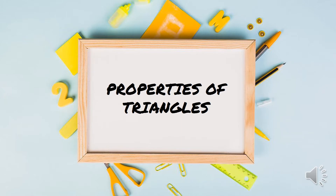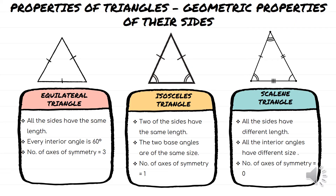Let's look at the properties of triangles first. We can classify triangles based on two properties: the first one is the geometric properties of their sides, and the second one is the geometric properties of their angles. Looking at the geometric properties of their sides, we have three types of triangles: equilateral triangle, isosceles triangle, and scalene triangle.